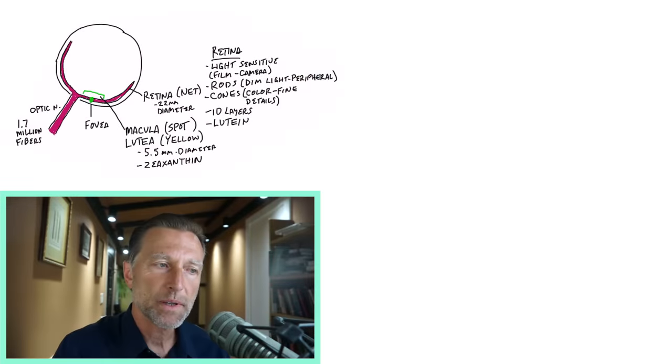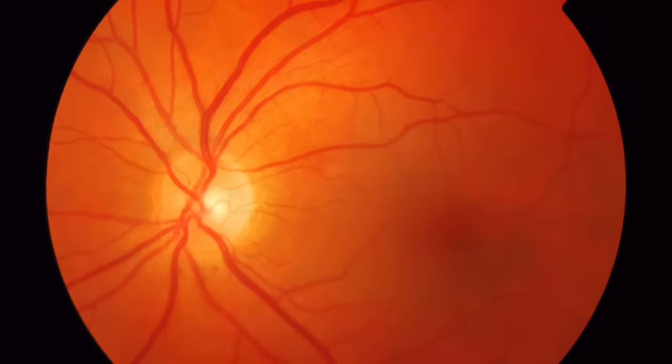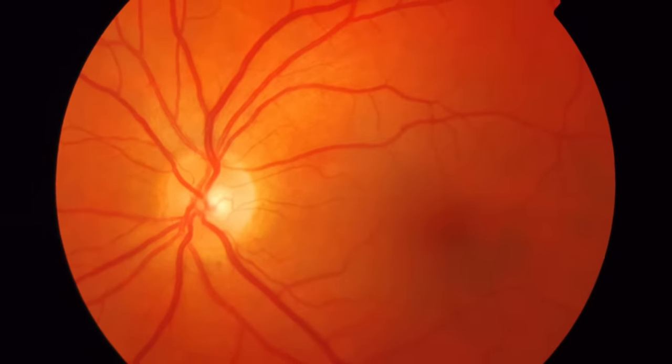Macula comes from the Latin word which means spot, and lutea means yellow. It's like a yellow spot because you have carotenoids in that area, which are kind of like a pigment that is photosensitive, so it responds to light.